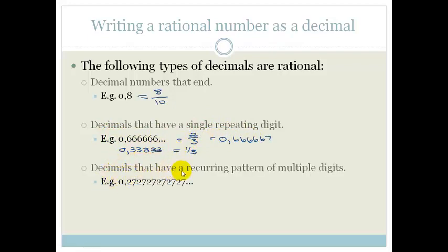Finally, decimals that have recurring patterns of multiple digits are considered to be rational. In other words, if it's 27272727, then we can say, oh look, it's recurring. And, therefore, it is a rational number.